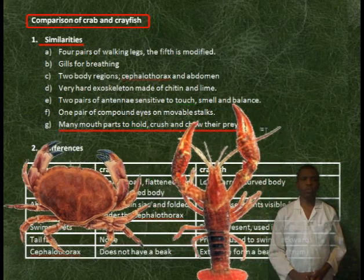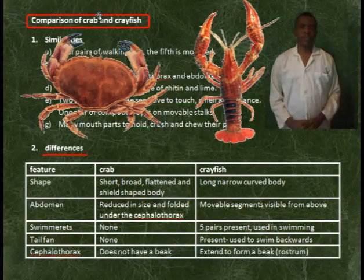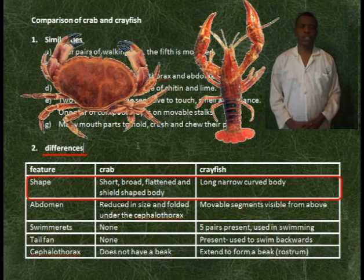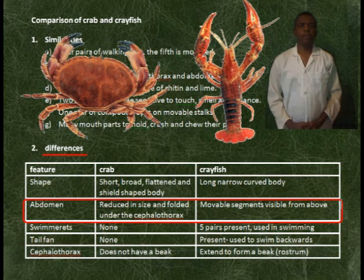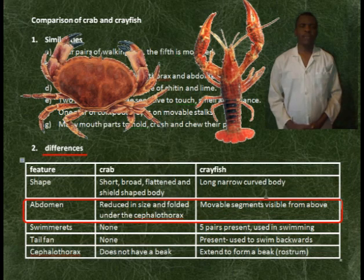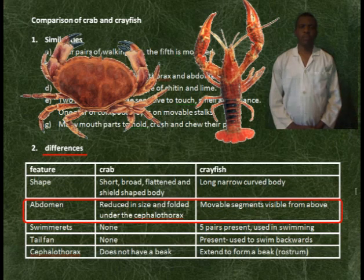Differences. The crab has a short, broad, flattened, and shear-shaped body, while the crayfish has a long, narrow, curved body. The abdomen of the crab is reduced in size and folded under the cephalothorax, while for the crayfish the abdomen has movable segments visible from above.